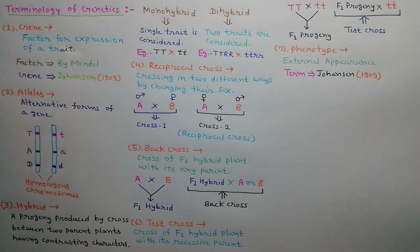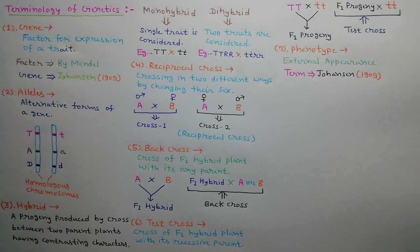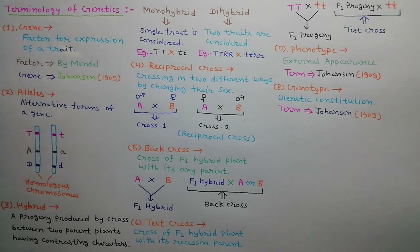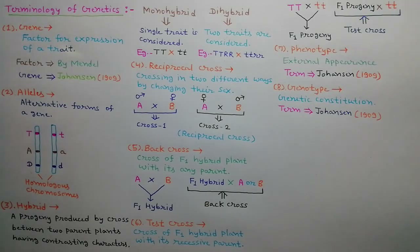Phenotype is the external appearance of any genetic trait of a plant. This term was given by Johansson in 1909. Genotype is the representation of the genetic constitution of an organism. This term was also given by Johansson in 1909.